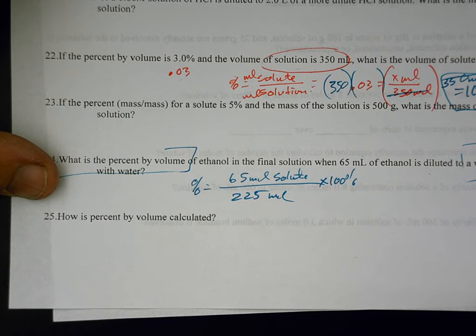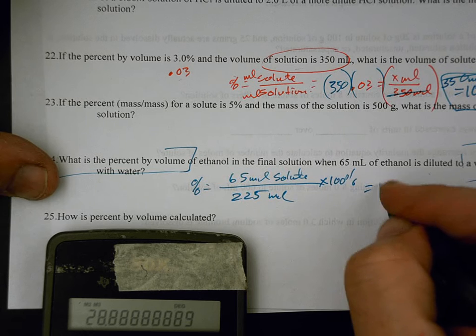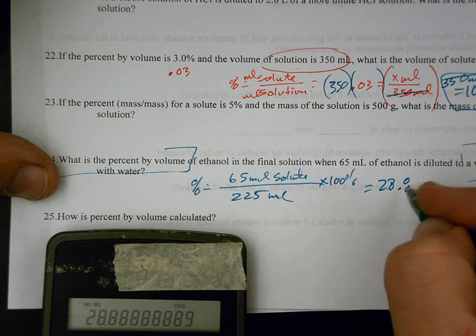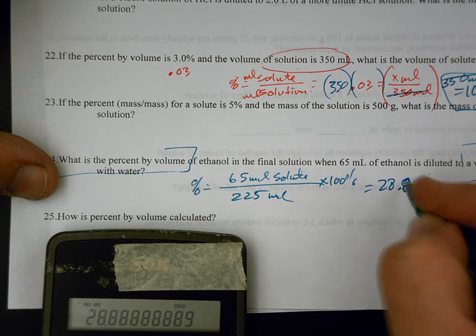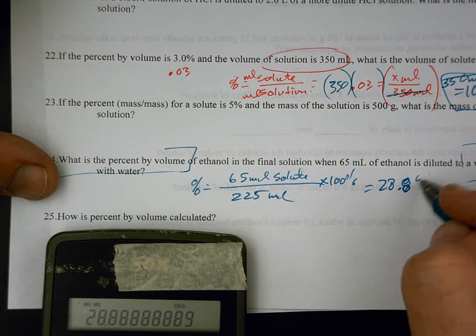And what is 65 divided by 225? Actually, it's 0.28, then times it by 100. 28.8 percent.